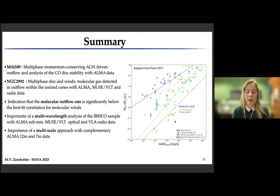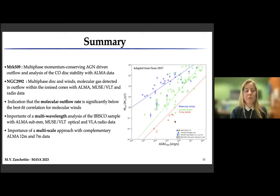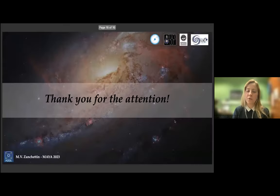I want to highlight the importance of a multi-wavelength analysis in an unbiased sample such as IBISCO, by exploiting ALMA, MUSE VLT optical, and VLA radio data. It is also important to perform a multi-scale approach, combining the ALMA 12-meter and 7-meter array data in order to recover emission also on diffuse scales not traced by the 12-meter array alone. These are my conclusions, and I thank you for your attention.